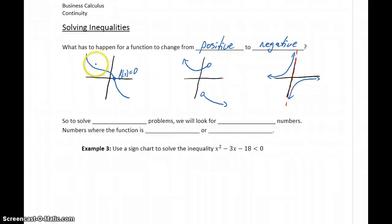So in order for our function value to change from positive to negative, either our function has to cross the x-axis, meaning it has to be 0 at some point, or we have to have a point of discontinuity so that we can have a break or jump. And the same would be true for it to change from negative to positive.